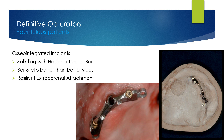Definitive obturators in edentulous patients can be retained successfully by dental implants. To maximize longevity, the implants should be splinted with a Hader bar or Dolder bar. The bar and clip attachment mechanism is better than ball or stud attachments. To minimize stresses to the defect tissues, resilient extracronal attachments like ERA are highly recommended.